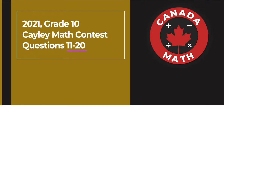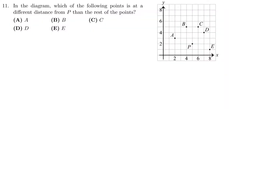Questions 11 through 20 on the 2021 Grade 10 Cayley Math Contest. In the diagram, which of the following points is at a different distance from P? Here's P, and it seems like everything is three in one direction and one in another. A is three across one up, B is one across three up, E is one down three across, and C is one across three up — all the same distance. But D is two across two up, so that's definitely different. Number 11, the answer is D.